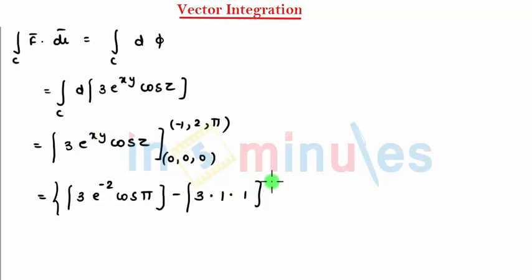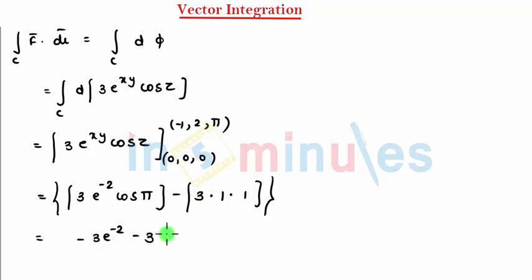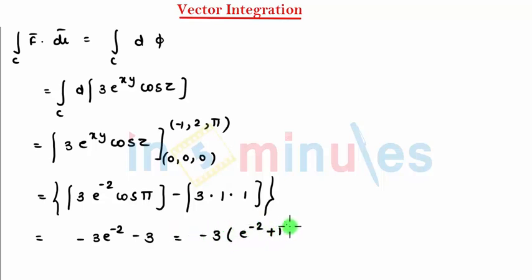So from here I get -3·e^(-2) minus 3. Taking -3 common, the final answer is -3(e^(-2) + 1). That's the final answer. Let's solve one more problem on this.